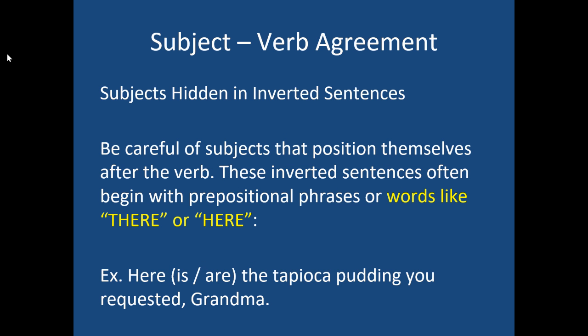Also be careful of hidden subjects, often in inverted sentences where the subject comes after the verb. These sentences often begin with a prepositional phrase or with words like 'there' or 'here'. For example: 'Here is or here are the tapioca pudding you requested, grandma.' The word 'here' is neither singular nor plural and has nothing to do with the subject. What you're really saying is 'the tapioca pudding you requested is here', and you'd naturally say 'the tapioca pudding is here' — because 'pudding' is your subject.